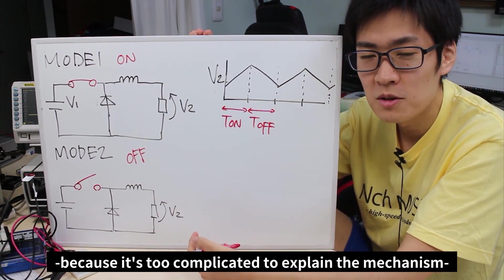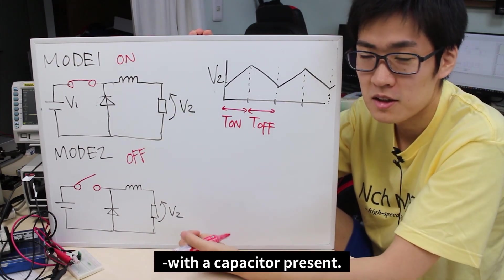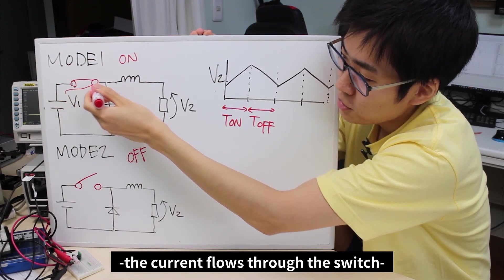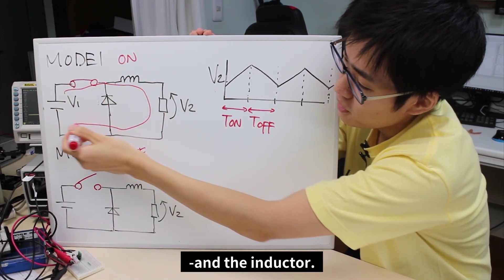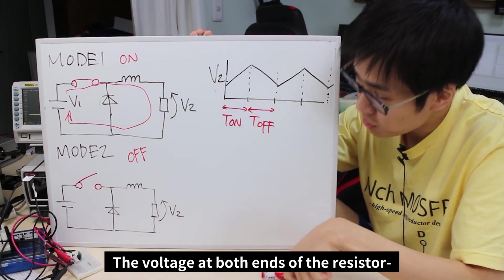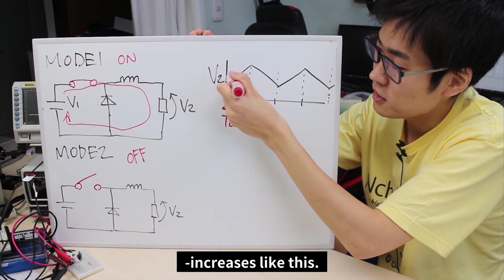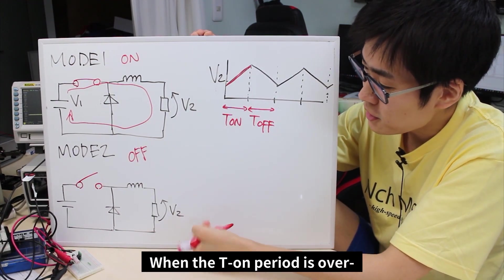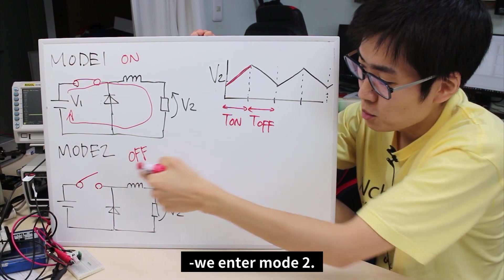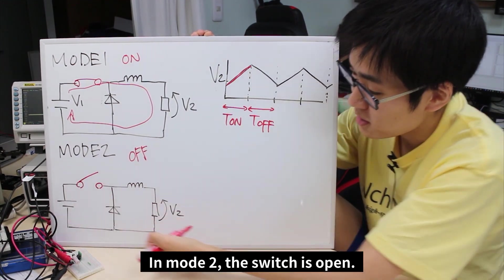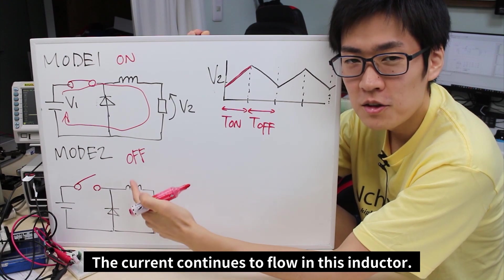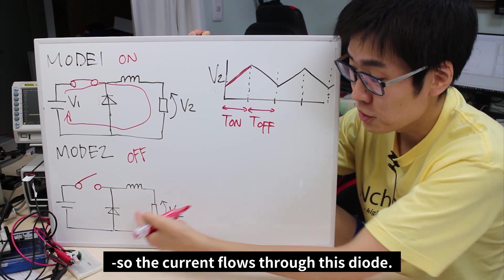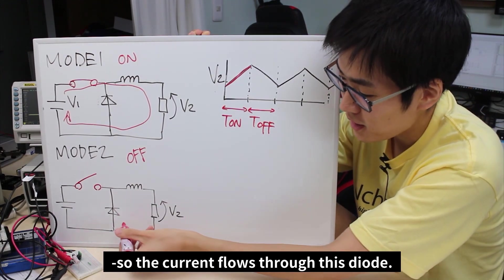I got rid of the capacitor here because the mechanism is much too complicated with one. What happens when the switch is on is the current flows through the switch and the inductor. The voltage at both ends of the resistor increases, and we'll call this period T on. When this T on period is over, we enter mode 2 where the switch is open. The current still continues to flow in this inductor.